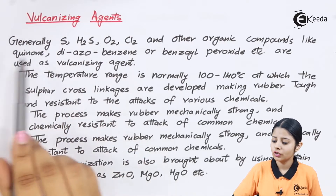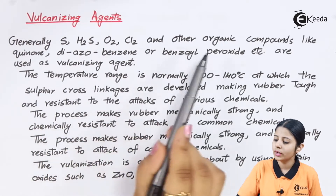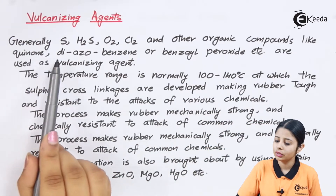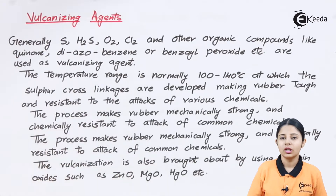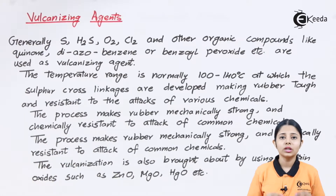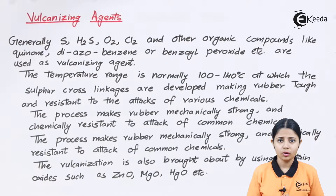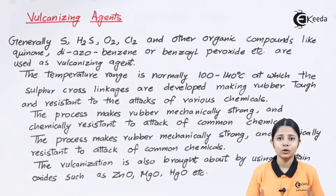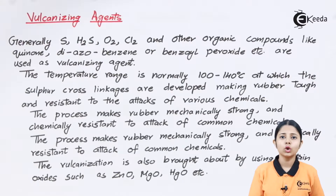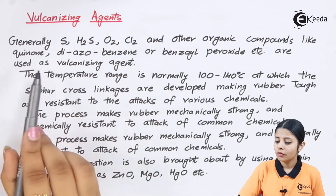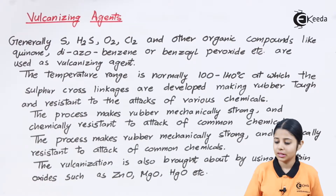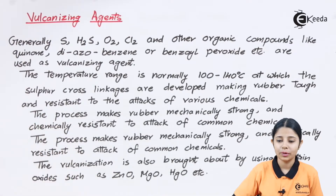Vulcanizing agents generally include sulfur, H2S, O2, Cl2, and other organic compounds like quinone, diazobenzene, or benzoyl peroxide. The process of vulcanization started only with sulfur — we used to take rubber, mix it with sulfur, and let the properties of sulfur get into the rubber to enhance its properties. Nowadays we not only use sulfur but many other elements such as H2S, oxygen, and chlorine.